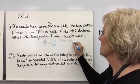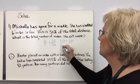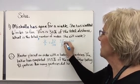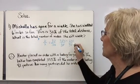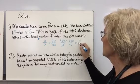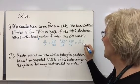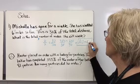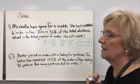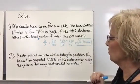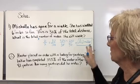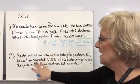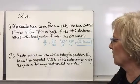When I cross multiply I'm going to get 30X equals 600. When I divide both sides by 30 to get X isolated, 30 goes into 600 twenty times. So I know that she has 20 miles total that she needs to walk. The total number that she will walk is 20 miles.